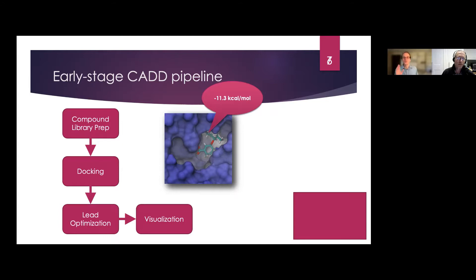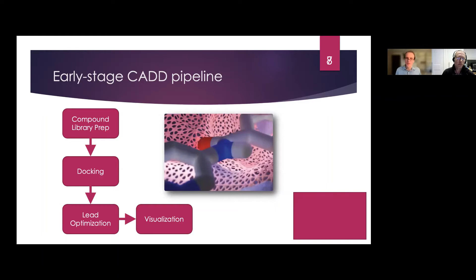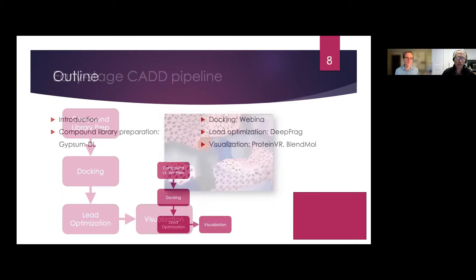Maybe you'll get a hit rate of 10 or 15 percent, which is much better than random chance. Once you have a compound positioned in the pocket and experimentally validated, a next step is lead optimization — identifying a region on the ligand where you could add a new chemical moiety or molecular fragment to further improve binding. Visualization is also critical throughout the process: it can reveal whether a candidate ligand truly complements the binding pocket and suggest strategies for lead optimization.